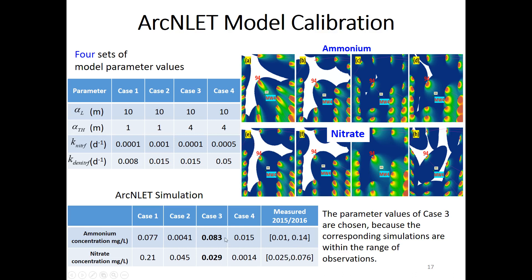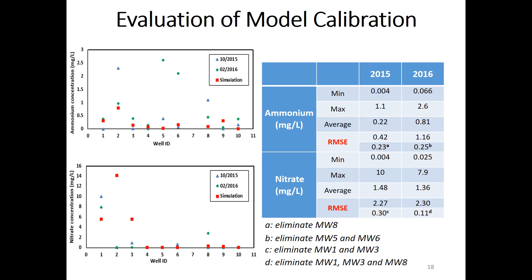It's important that both concentrations are within the measurement range. For example, in one case the ammonium concentration is within range but the nitrate concentration is not — that's why Case 3 is more meaningful. These are our calibrated parameter values, and we use them to simulate ammonium, ammonia, and nitrate concentration at all 10 monitoring wells.